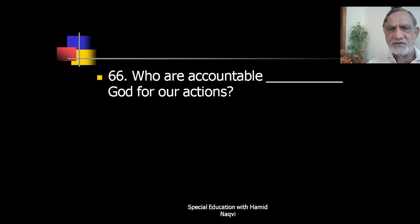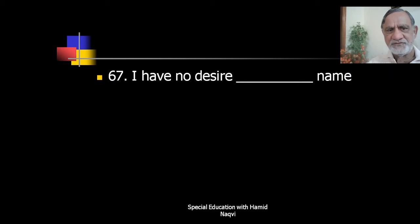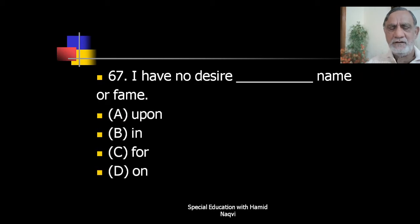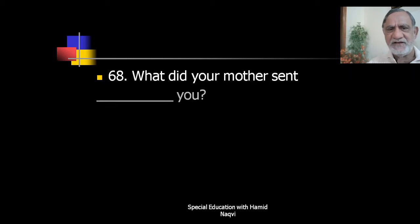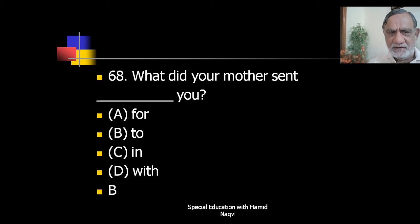'Who are accountable ___ God for our actions?' The correct preposition is 'to.' 'I have no desire ___ name or fame.' The correct is 'for' — I have no desire for name or fame. 'What did your mother send ___ you?' The correct is 'to' — what did your mother send to you? 'Saima looks ___ her father.' The correct is 'after' — Saima looks after her father.